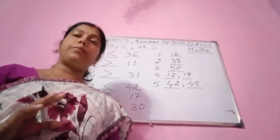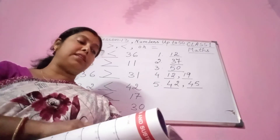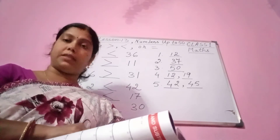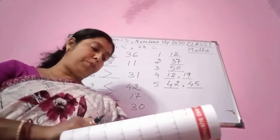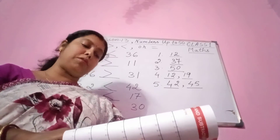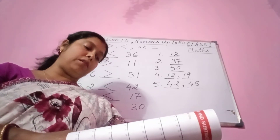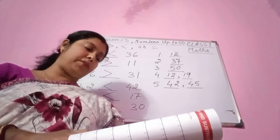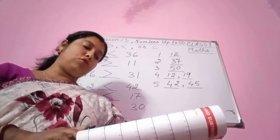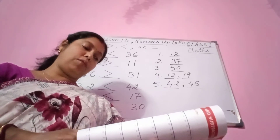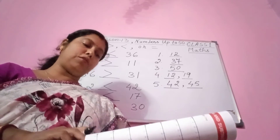Children, we have completed this lesson — Lesson 13, Numbers up to 50. Please see the last activity: write any numbers between 1 to 50 in the blank wheel. Colour the parts — numbers 1 to 10 yellow, 11 to 20 red, 21 to 30 blue, 31 to 40 green, 41 to 50 pink.